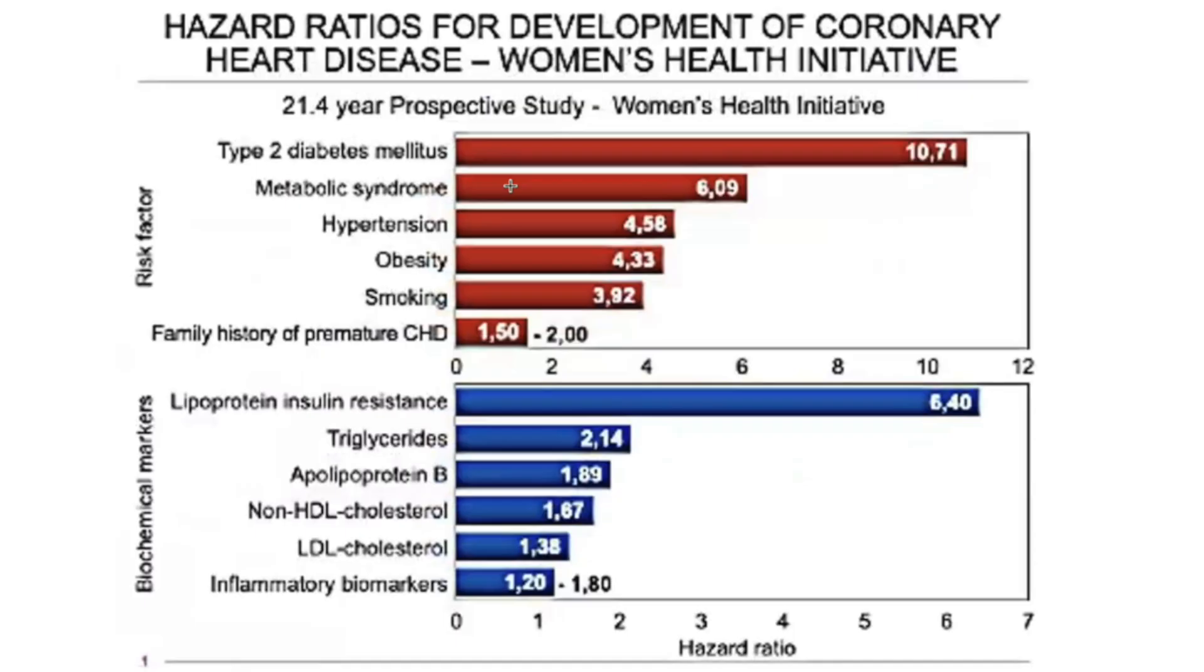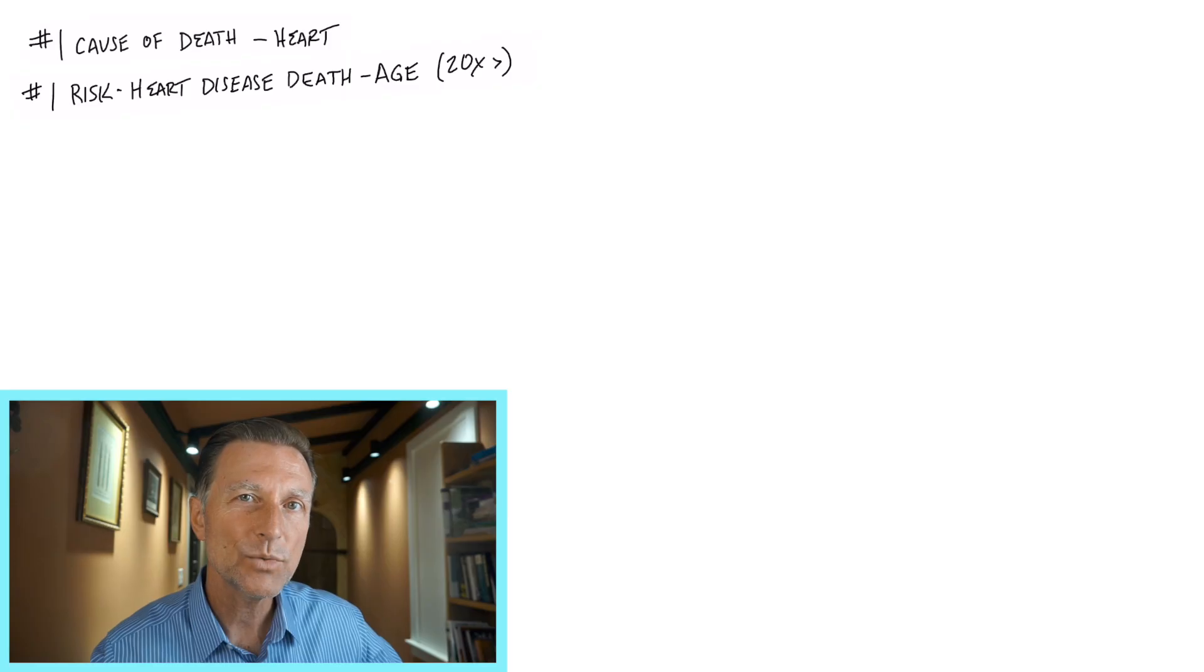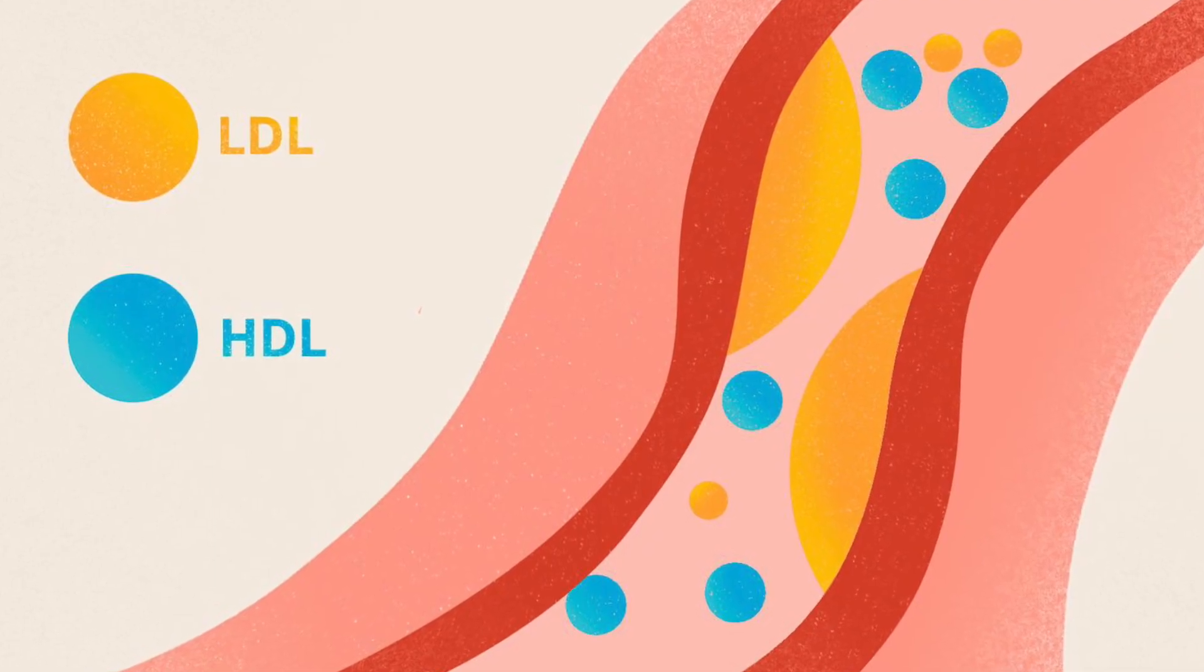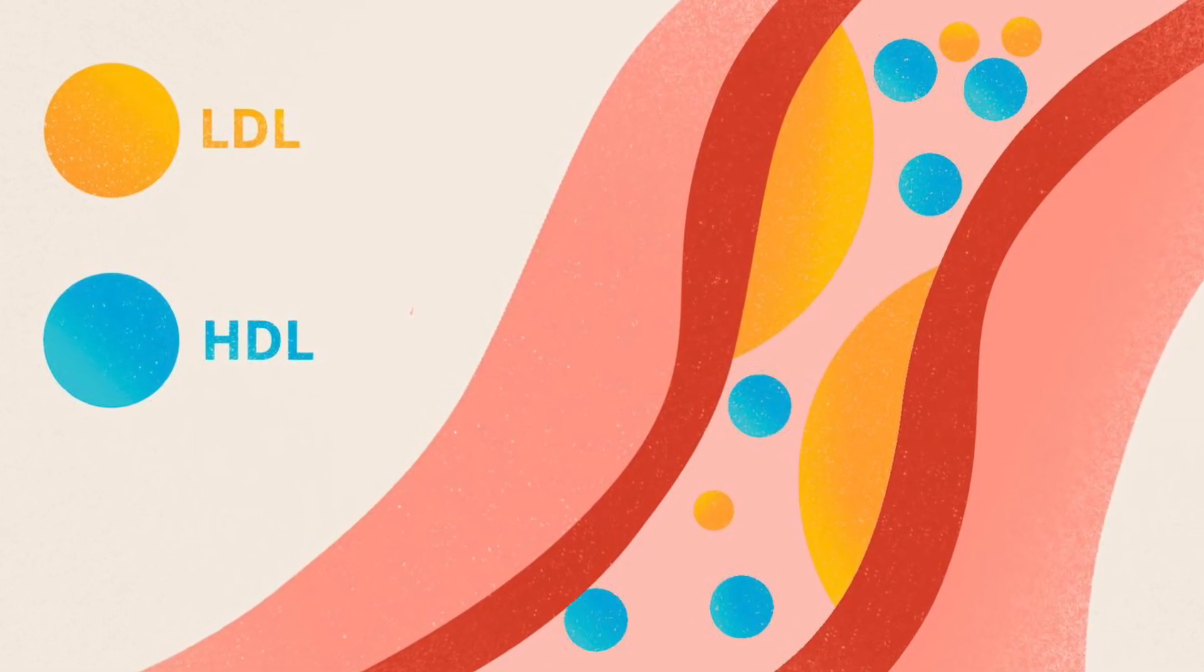And if we look at the biomarkers, specifically insulin resistance. Now you're probably wondering what lipoprotein insulin resistance is. That's a fairly new but very reliable biomarker of insulin resistance. Look at insulin resistance compared to what everyone focuses on is the LDL as a risk factor for heart attacks, the so-called bad cholesterol.